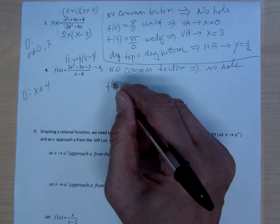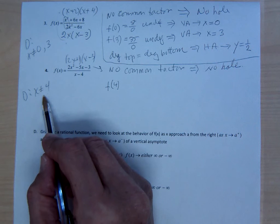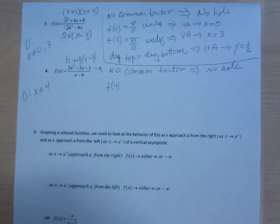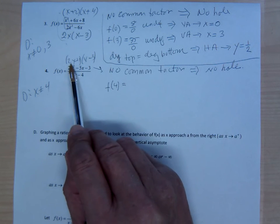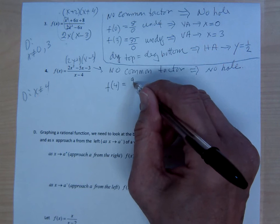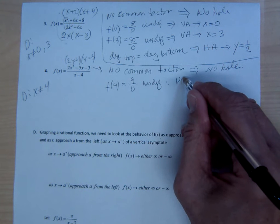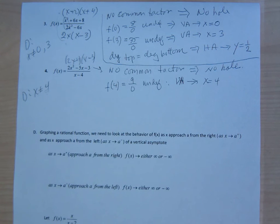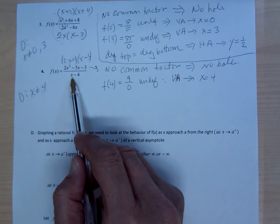Since x cannot equal 4, I need to check 4 for the vertical asymptote. Where the domain is discontinuous, you determine whether you have a hole or a vertical asymptote — you cannot have both at the same x value. Since there's no hole, checking f(4) gives 9 times 2, which is 9 over 0 — undefined. So that means a vertical asymptote. The degree on top is one more than the degree on the bottom, so you have an oblique.